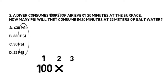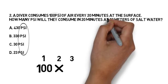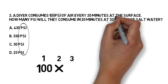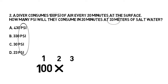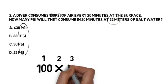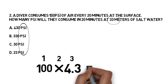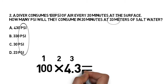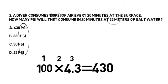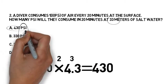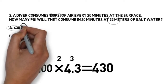The final step is to look at the depth. We've got 33 meters. Using the depth-pressure chart that you learned in video one of this series, you should be able to calculate that's 4.3 atmospheres of pressure at that depth. We now have what we need: 100 times 4.3 is 430 PSI. Answer A.